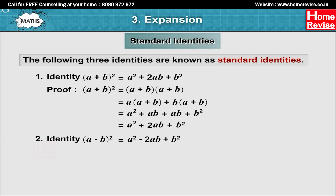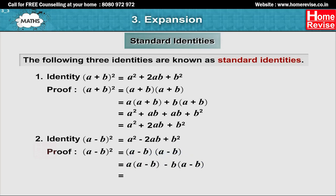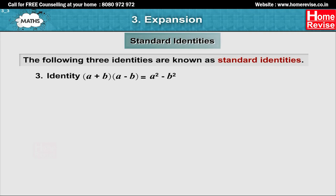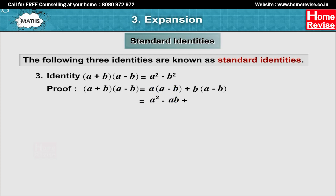Identity 2: (a minus b) whole squared equals a squared minus 2ab plus b squared. Proof: (a minus b) squared equals (a minus b)(a minus b) equals a(a minus b) minus b(a minus b) equals a squared minus ab minus ab plus b squared, which equals a squared minus 2ab plus b squared. Identity 3: (a plus b) into (a minus b) equals a squared minus b squared. Proof: (a plus b)(a minus b) equals a(a minus b) plus b(a minus b) equals a squared minus ab plus ab minus b squared, which equals a squared minus b squared.